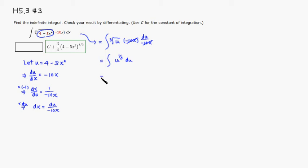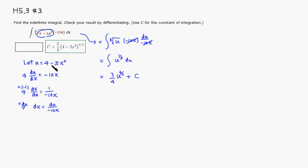We use the simple power rule — add one to the exponent, giving four thirds. Dividing by four thirds is the same as multiplying by three quarters, so we put three quarters in front, then add the constant c.